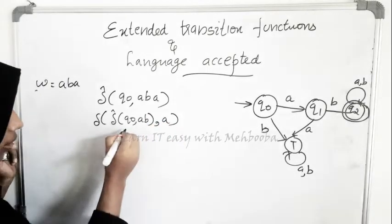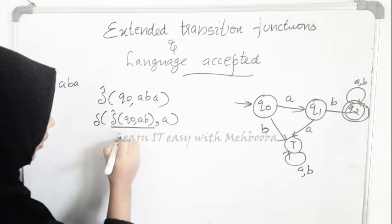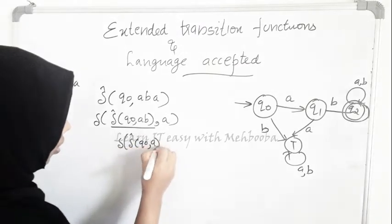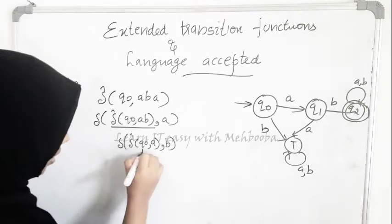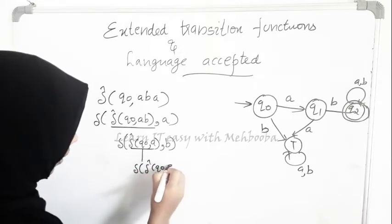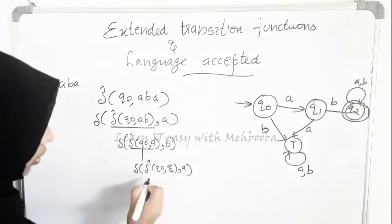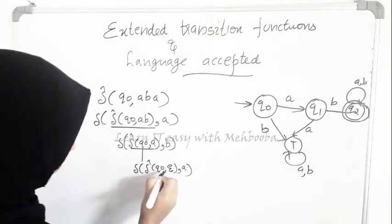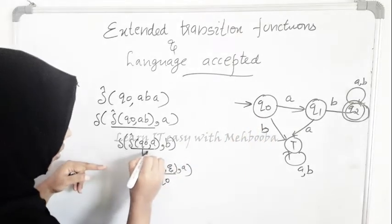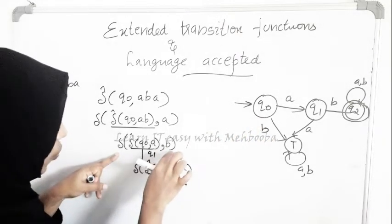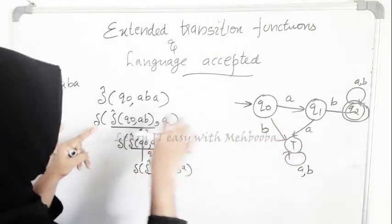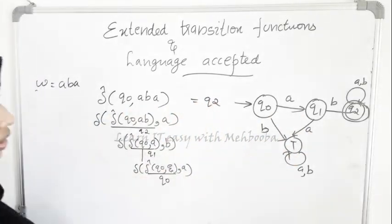Again, delta-cap(q0, AB) = delta of delta-cap(q0, A), comma B. The inner part delta-cap(q0, A) = delta(q0, A) = q1. So delta(q1, B) = q2. Then delta(q2, A) = q2 itself. Hence this string is accepted.